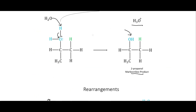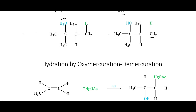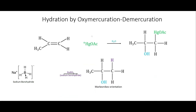Another way of doing this is called hydration by oxymercuration-demercuration. They call it that because we're using a mercury species — mercury bound to an acetate — which has a positive charge and can act as an electrophile. This will bind onto the least substituted carbon, then water will come in and bind to the more substituted carbon — the electrons from the double bond go toward that mercury species.